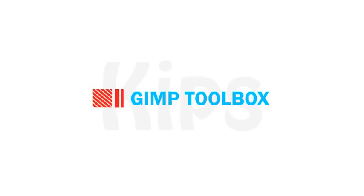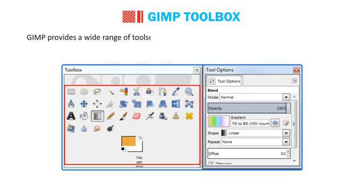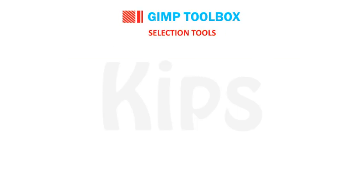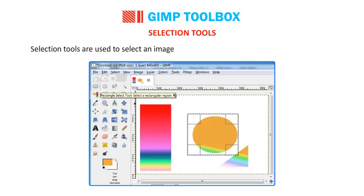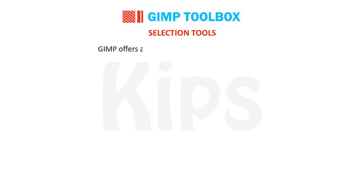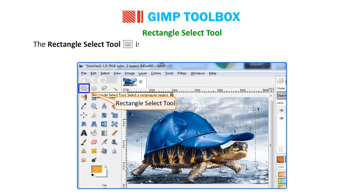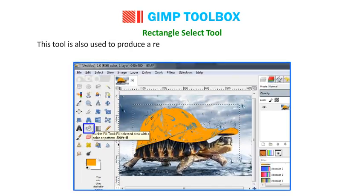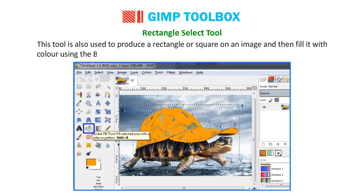GIMP provides a wide range of tools to draw, paint, select, transform and erase an image. The tools are categorized into five sections: Selection Tools, Paint Tools, Transform Tools, Color Tools and Other Tools. Selection Tools are used to select an image or any part of it to perform various operations. The selected area is surrounded by a moving dash line known as Marching Ants. The Rectangle Select Tool is used to select a rectangular area of an image you want to edit. It is also used to produce a rectangle or square on an image and then fill it with color using the bucket fill tool. Use shortcut key R, or go to Tools, Selection Tools, Rectangle Select.